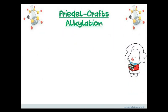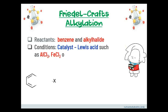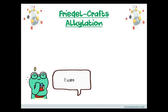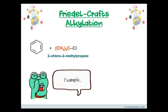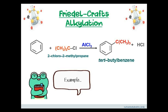The next reaction is Friedel-Crafts alkylation. The reactant must contain an alkyl halide in the presence of a Lewis acid as catalyst. This reaction is useful when adding an alkyl group into the benzene ring to produce an alkyl benzene. For example, benzene reacts with 2-chloro-2-methylpropane in the presence of AlCl3 to produce tert-butylbenzene, with hydrochloric acid as a by-product.